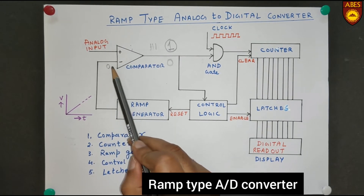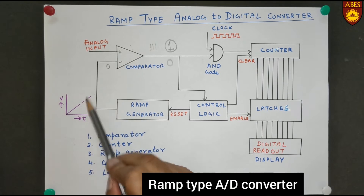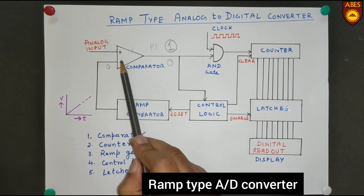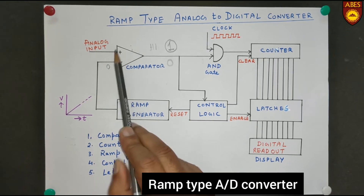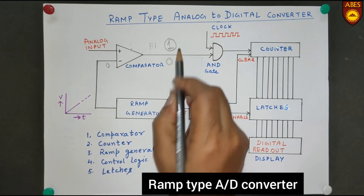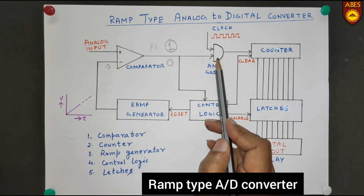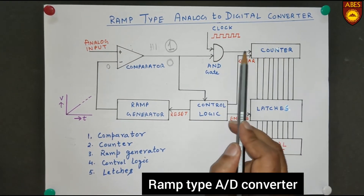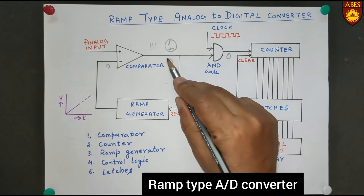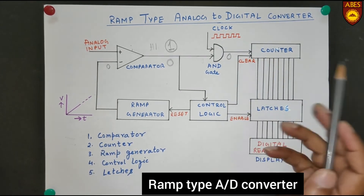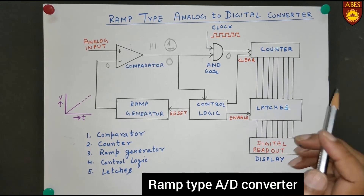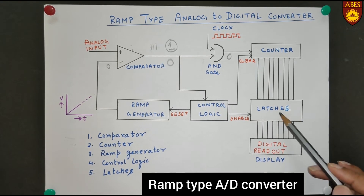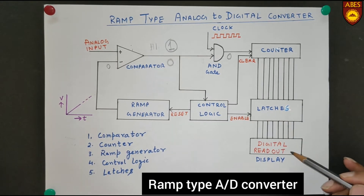When the input to the negative terminal from the Ramp Generator becomes equal to the analog input, and as soon as it surpasses that value, the Comparator output becomes 0. When the Comparator output is 0 at the AND gate input, the clock pulses are no longer passed to the counter and counting stops. The final count is stored in the latches, which act as a memory unit, and is then sent to the digital display unit.